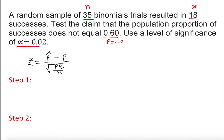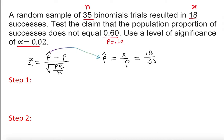Phi-hat is not given, so we need to find it. Phi-hat, the sample proportion, equals x over n, which is 18 over 35. We'll keep it as a fraction rather than converting to decimal to avoid losing reliability.